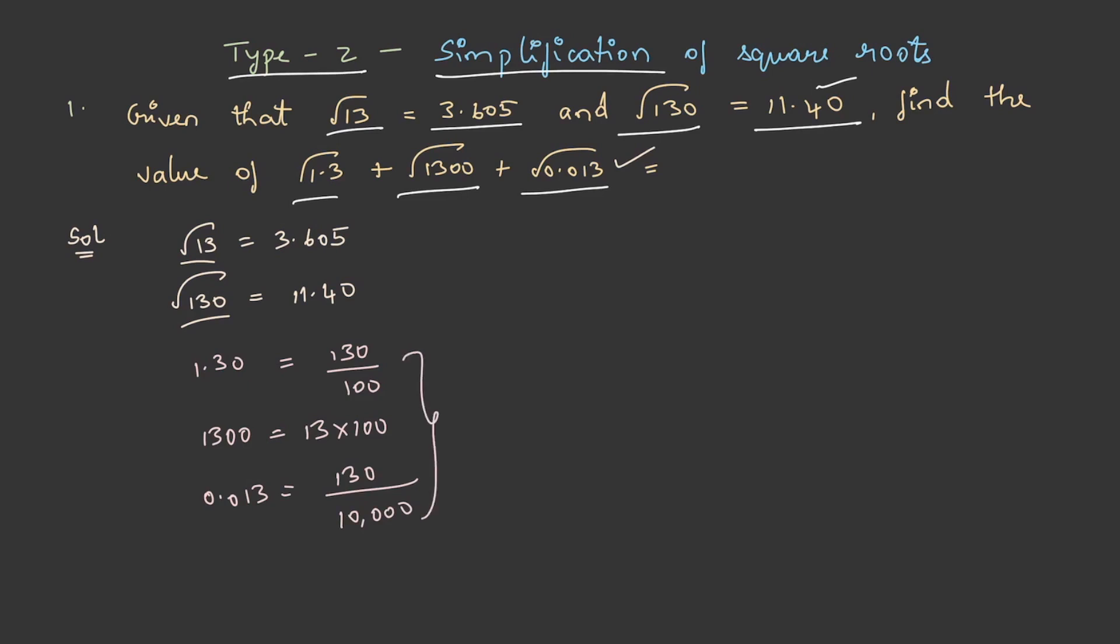By substituting these values, we get √(130/100) + √(13×100) + √(130/10000).